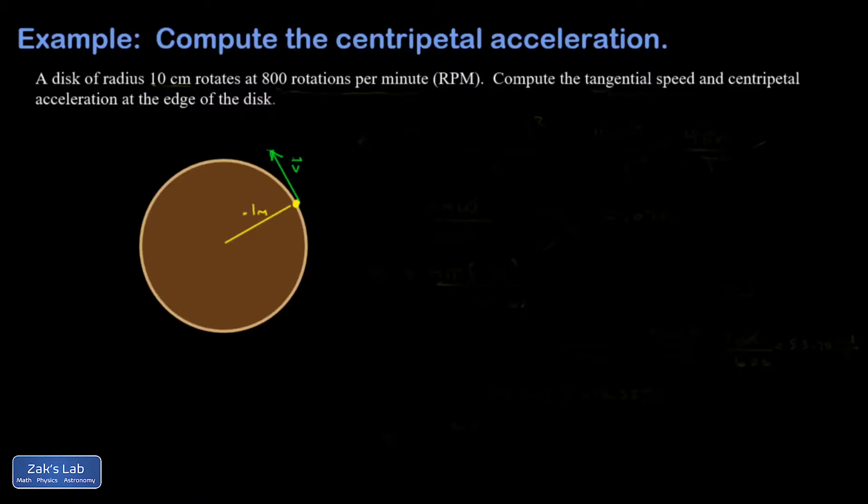In this problem, we have a simple spinning disk, and I'm interested in getting the centripetal acceleration at the perimeter. And I also threw in a question about the tangential speed at the perimeter.